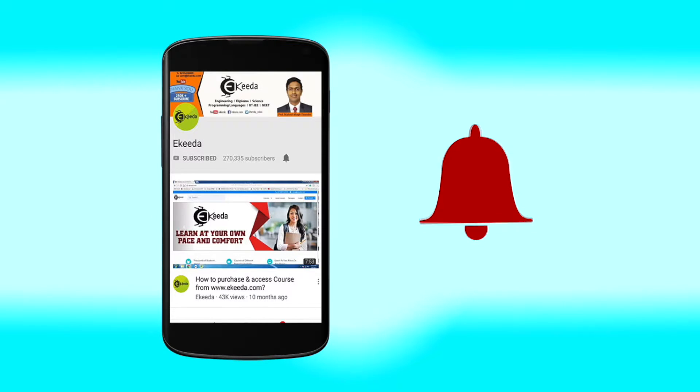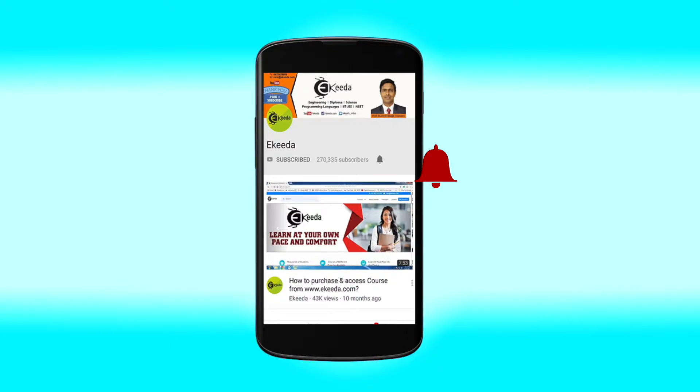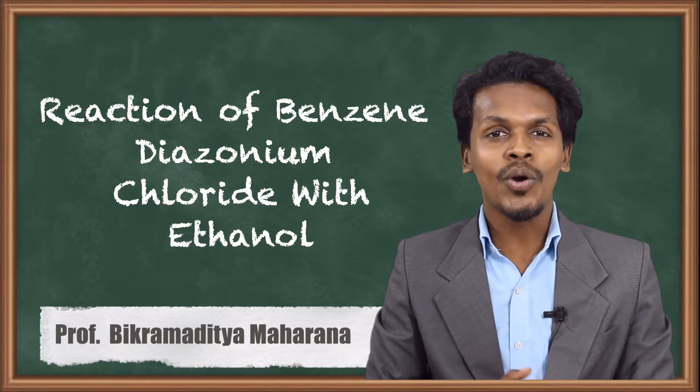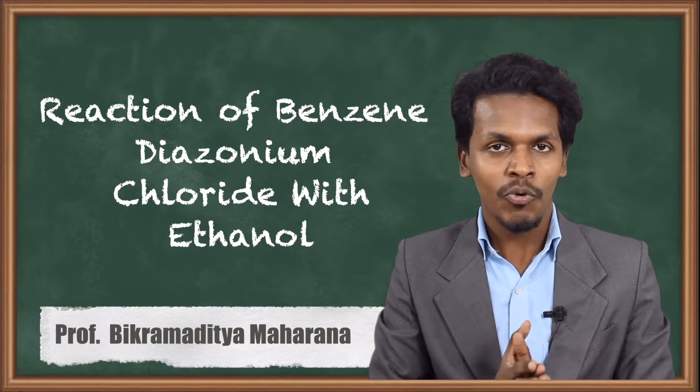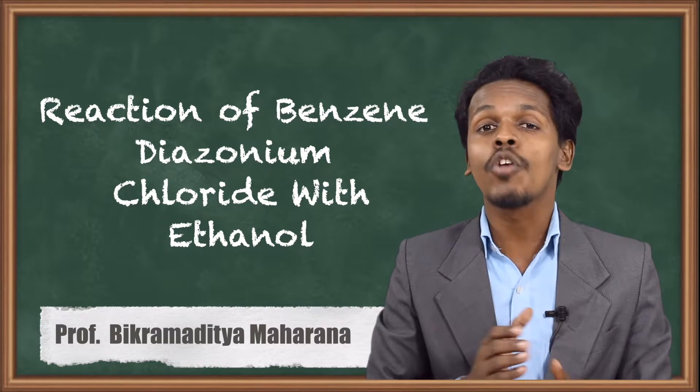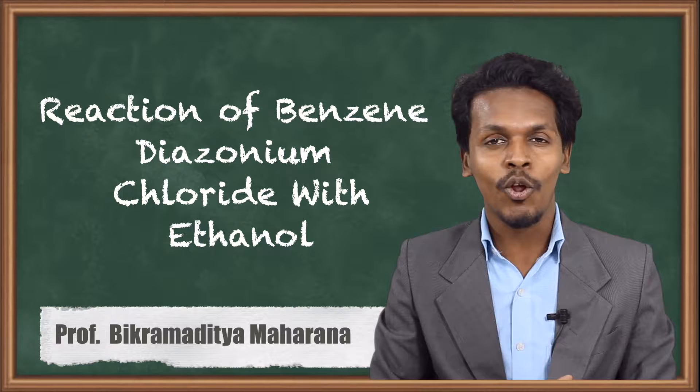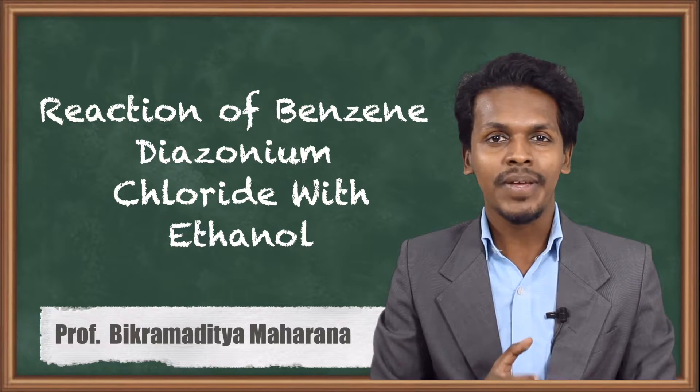Click the bell icon to get latest videos from Ekeeda. Hello friends, in the previous lecture we discussed the reaction of benzene diazonium chloride with phosphonic acid. Now we're going to talk about the reaction of benzene diazonium chloride with ethanol. Let me explain this topic very clearly.